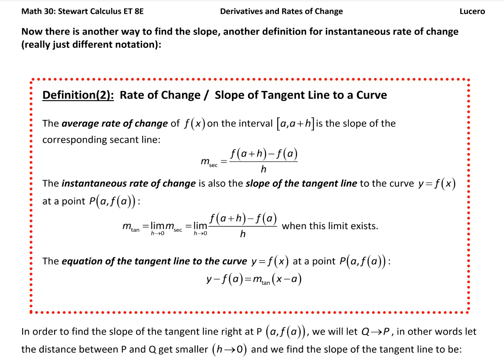Let's take a look at our second definition for rate of change and slope of tangent line to a curve. Just as a caveat, this is really just another way of writing our first definition. Our first definition took a limit as Q approached P on a tangent line. We were taking a secant line and making it approach a tangent line to a curve at a point P.